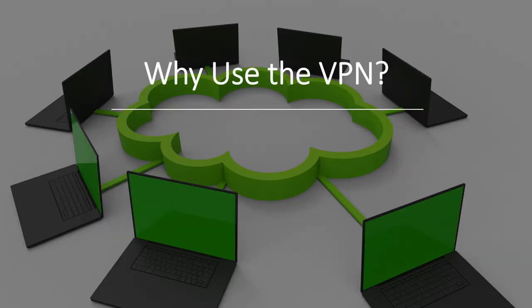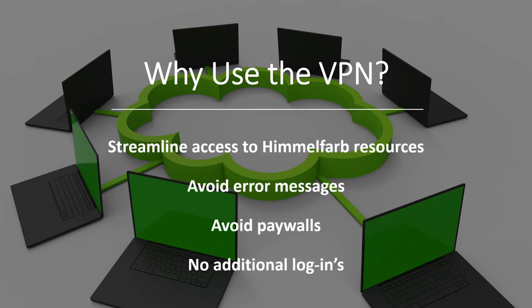Let's talk about why using the VPN is a good idea. When you're off-campus, websites might not necessarily know that you are affiliated with GW, and that you should have access to Himmelfarb's resources through this affiliation. If you go to a website and try to access an ebook or journal article, you may get an error message, a login page, or may even be asked to pay a fee. If Himmelfarb Library subscribes to that resource, there is no need to pay that fee. You just need to authenticate and show that you are affiliated with GW.